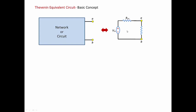We're going to remove the load resistors and then the question becomes how to find V-Thevenin and R-Thevenin. The basic idea is that if we remove the load resistance from terminals A and B, whether it is on the equivalent or the original circuit, it's the same thing. We're going to look intuitively at the circuit, so whatever logic we apply to the equivalent circuit will also be applied to the original circuit.